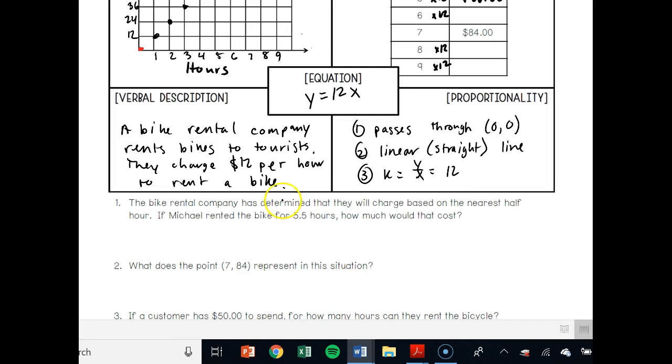It says the bike rental company has determined that they will charge based on the nearest half hour. So if Michael rented a bike for 5.5 hours, how much would that cost? If they're charging on the nearest half hour, it's like you rent something and you get it for five and a half hours and they say that's actually going to be six hours. So then all we do is plug this into our equation. Y equals 12x, y equals 12 times six. So that's going to cost us y is equal to $72.